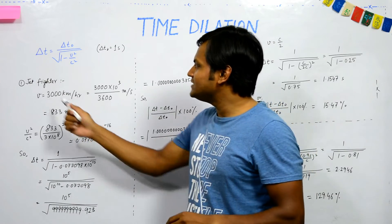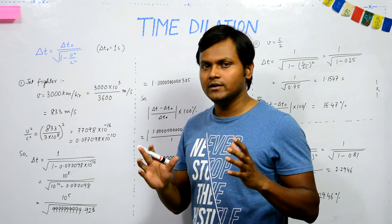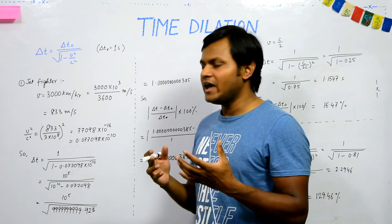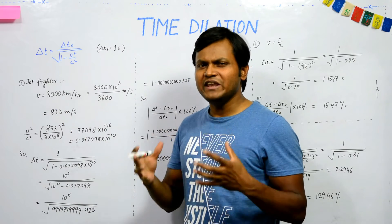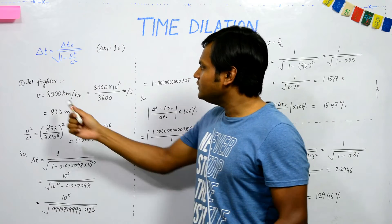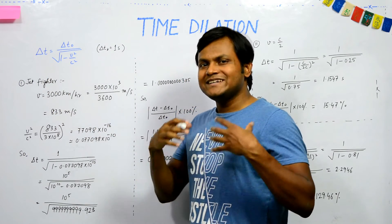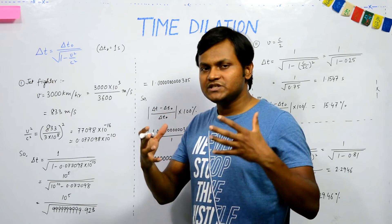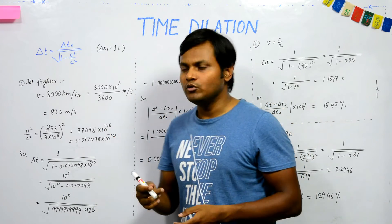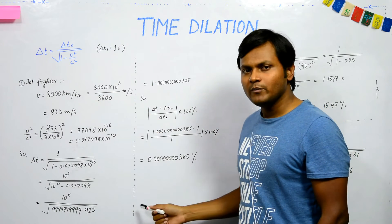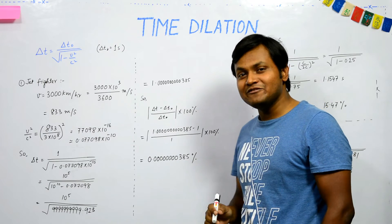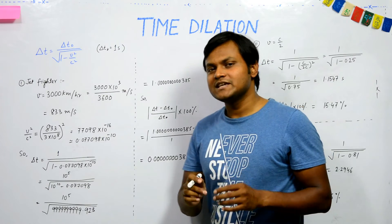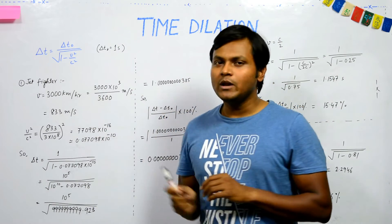Let's look at a few examples. For a very fast-moving jet fighter plane flying at a top speed of greater than 3000 kilometers per hour, if we put these values into the expression, the time period difference between the fighter pilot and somebody on the ground comes out to be on the order of 0.000000385% — an extremely small difference.